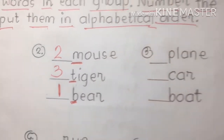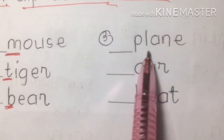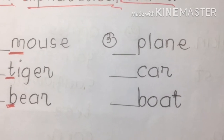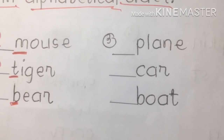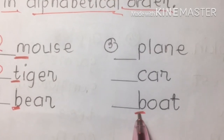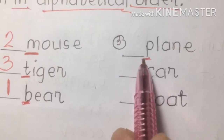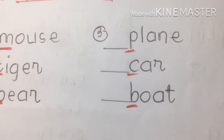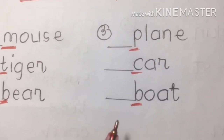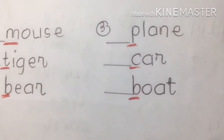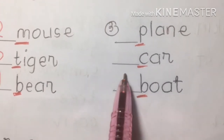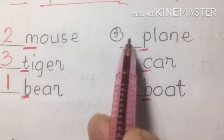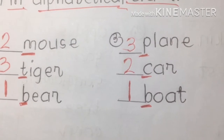Number three: plane, car, boat — names of transportation. Same procedure: underline the initial sound of each word. We have B, C, and P. B comes before C, so boat is number one, car is number two, and plane is number three.